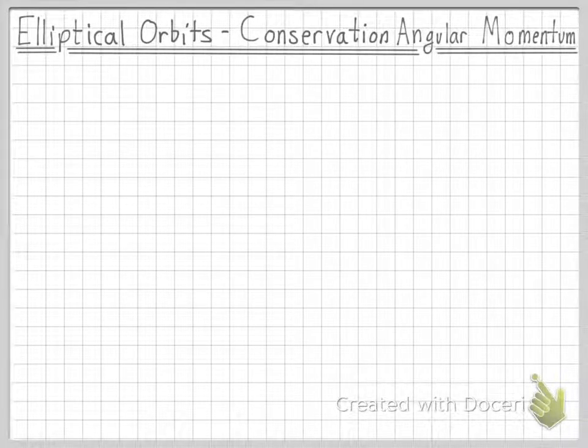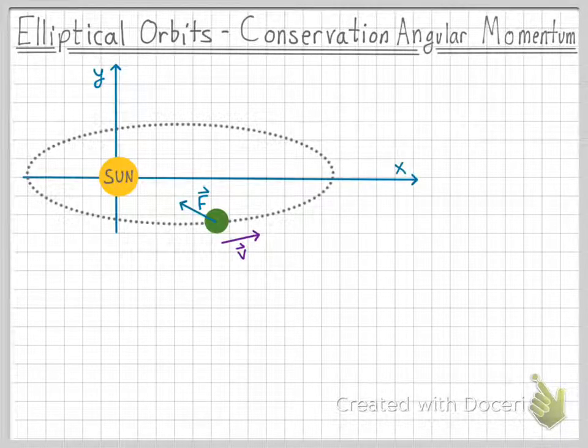This video reviews how we can apply conservation of momentum to elliptical orbits. Imagine that we have a planet here that is orbiting the sun in an elliptical orbit. The planet feels a gravitational force towards the sun and is traveling at a particular velocity v around the sun.